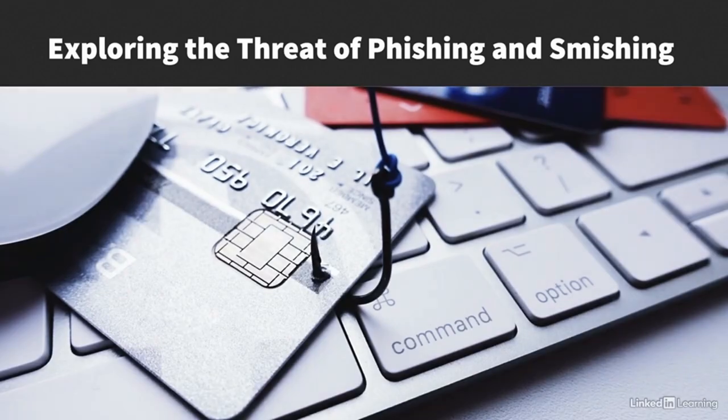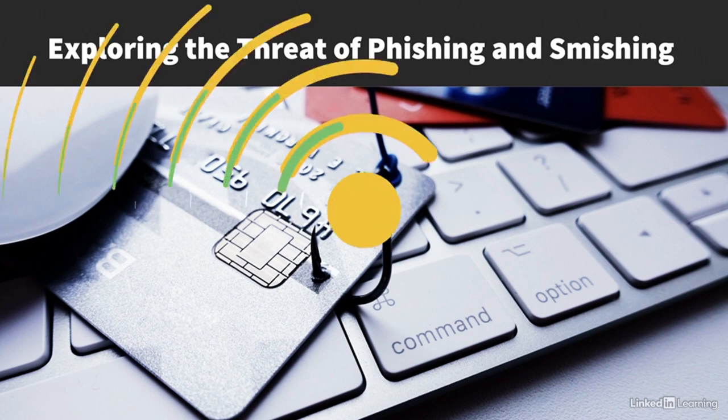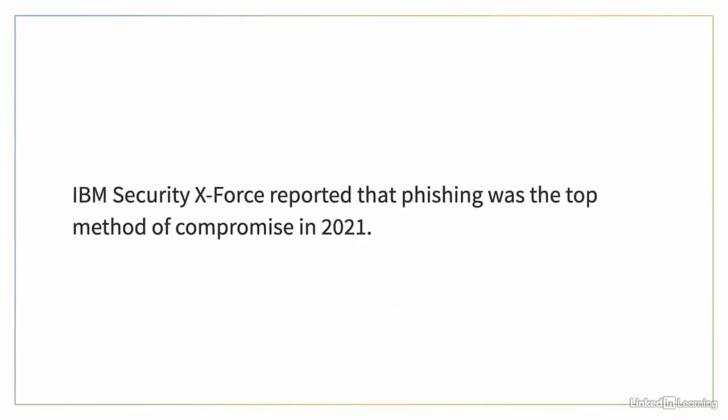Phishing and smishing are social engineering attacks designed to trick users into sharing sensitive personal information like usernames, passwords, and credit card details with attackers. Phishing has been around since the 1990s, but it's still going strong. IBM Security X-Force reported that phishing was the top method of compromise in 2021.